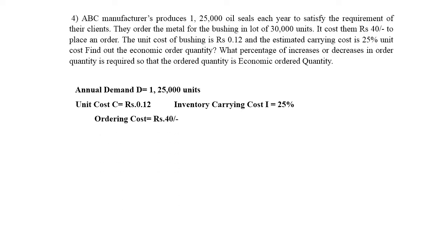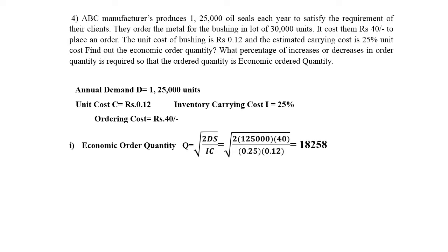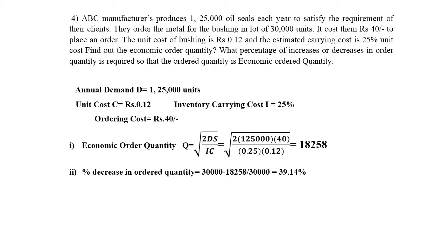The ordering cost or procurement cost is rupees 40. The economic order quantity is found using the same formula, but this time I is placed as 25% — that is 0.25 — of the unit cost. This gives the economic order quantity as 18,258 units. Since the company has already ordered 30,000 units but the EOQ is 18,258, we can calculate the percentage decrease. The company needs to reduce its order quantity by 29.14% to reach the economic order zone.